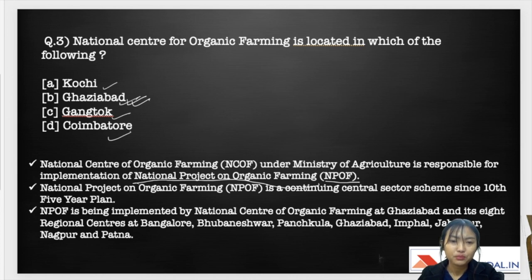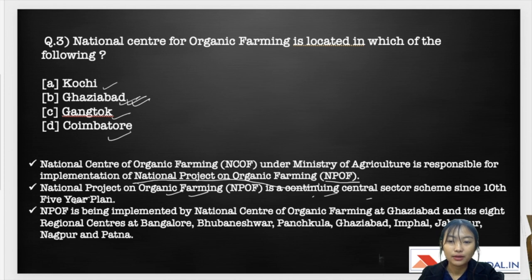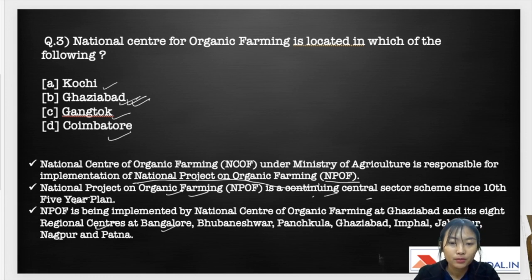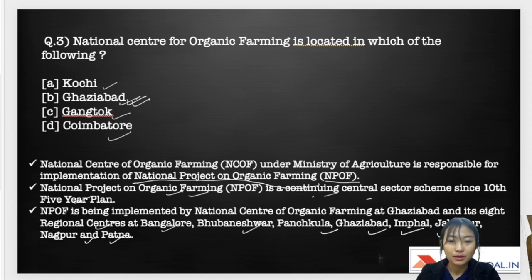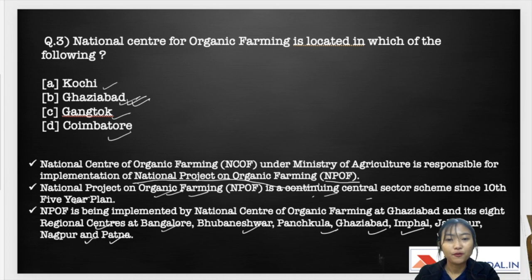NPOF is a continuing central sector scheme since the 10th Five-Year Plan, implemented by the National Center for Organic Farming at Ghaziabad. It has eight regional centers located in Bangalore, Bhubaneswar, Panchkula, Ghaziabad, Imphal, Jabalpur, Nagpur, and Patna. Please comment in the comments section about the main objectives and features of this project.